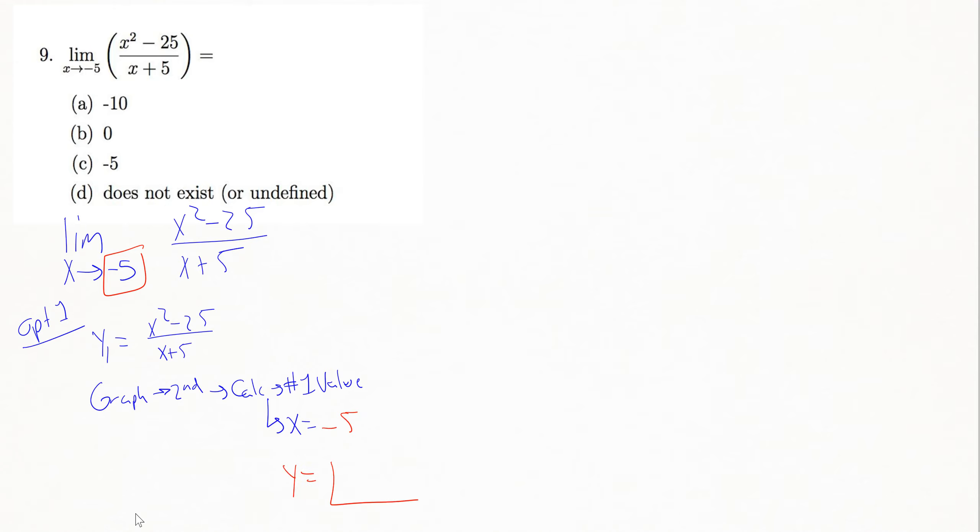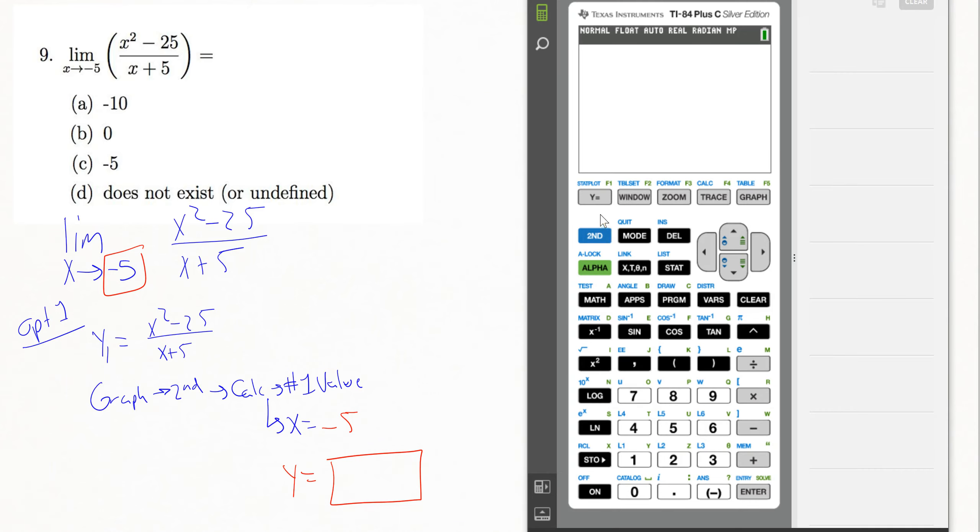Whatever y comes out as would be my answer if option 1 works. So pull out my calculator, go into my y equals. On the newer TI-84s, you can hit this alpha button, that green button on the left side there, and then y equals, and it'll pull up this menu.